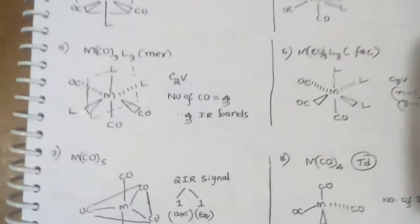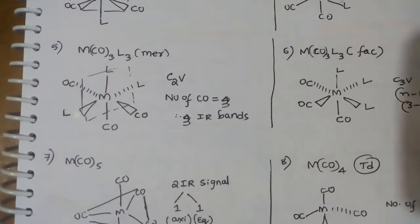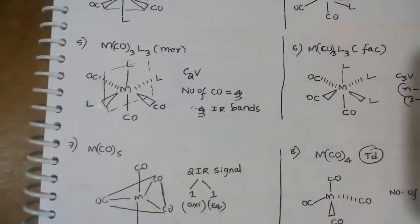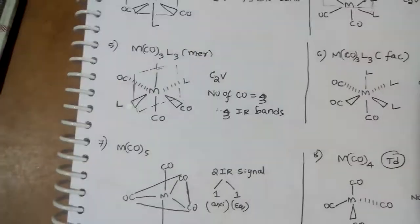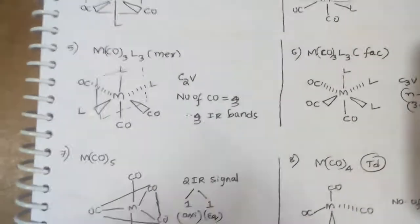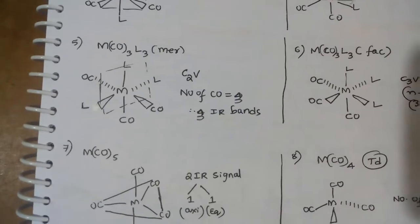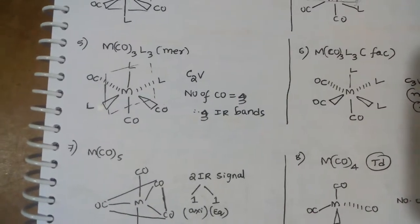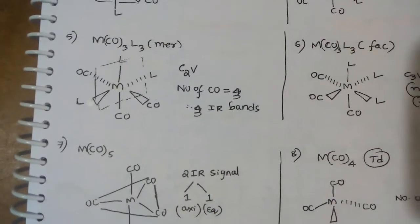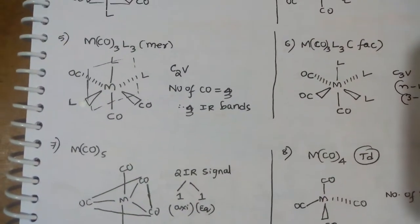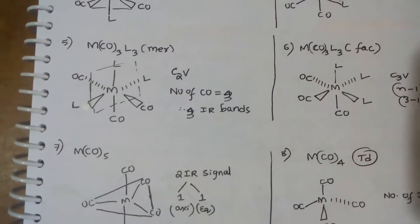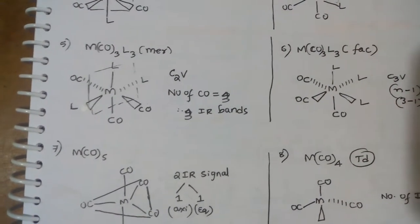For MCO3L3 meridional complex, its point group is C2V. Here, number of CO groups are three. Therefore, number of IR bands is also three.